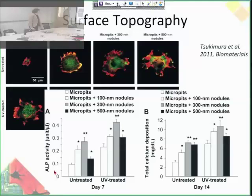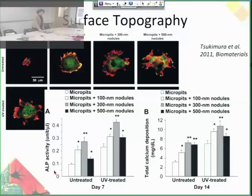You also see a difference between untreated and UV-treated surfaces. UV light is another way you can modify the surface of a material — for polymers, it might cause some local degradation on the surface, for example.